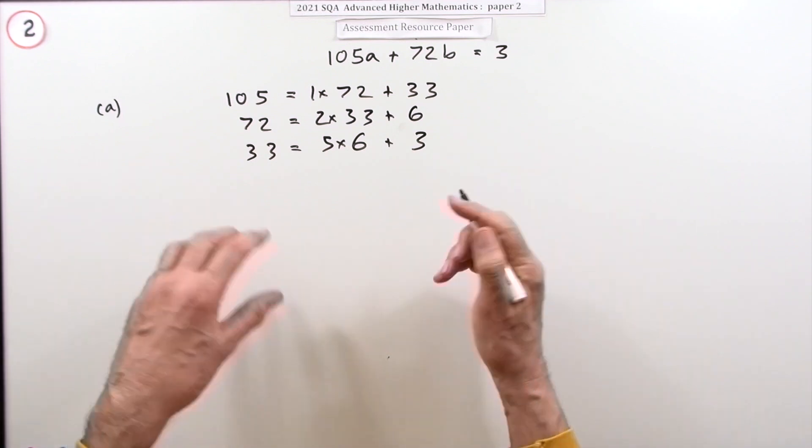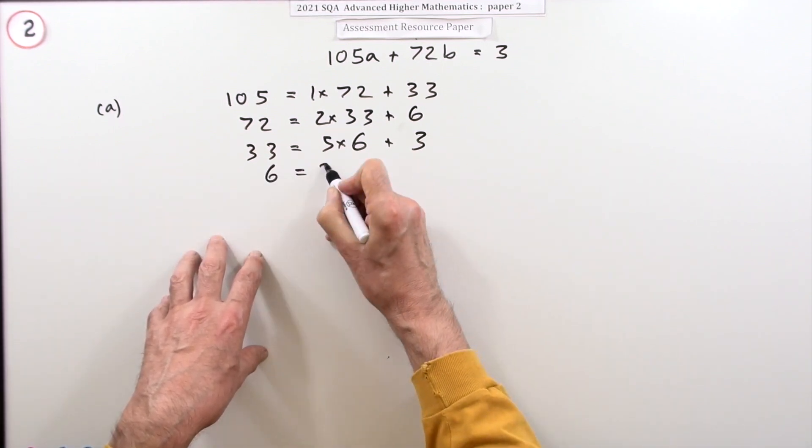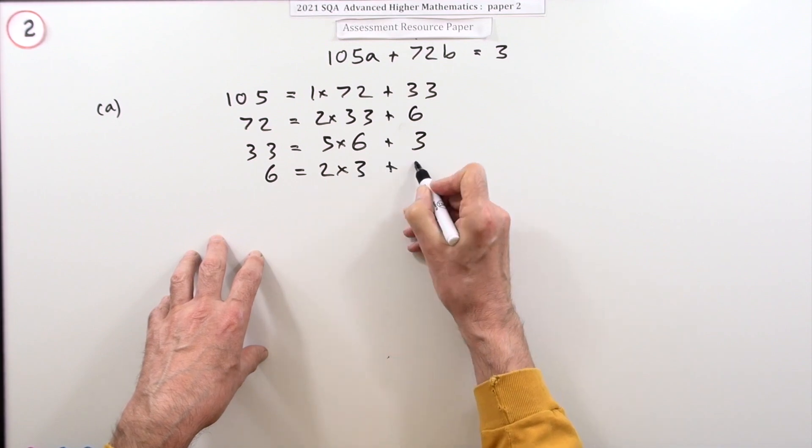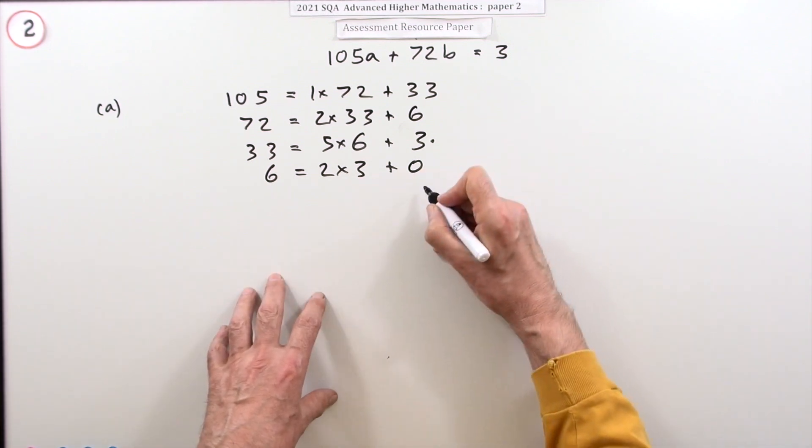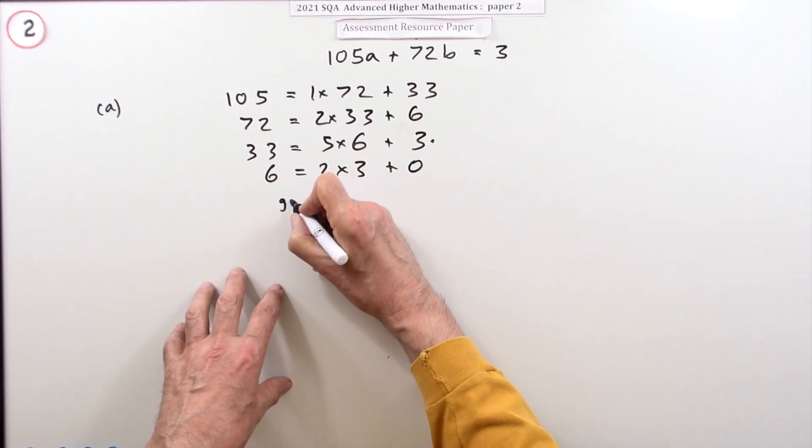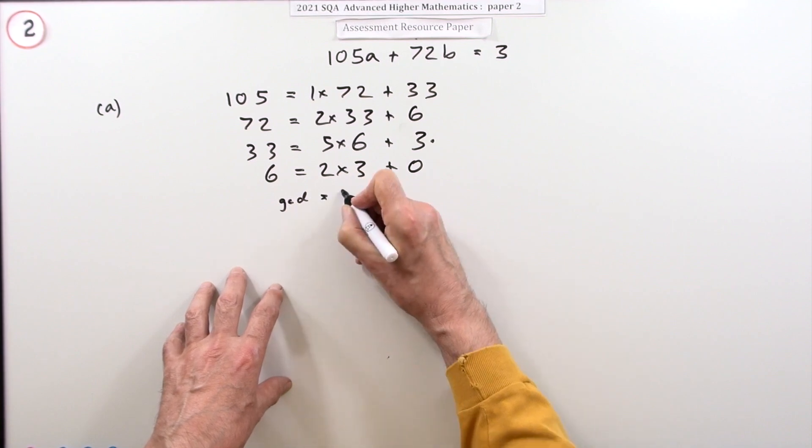That's it. Six equals two times three with zero left over. So the greatest common divisor is three.